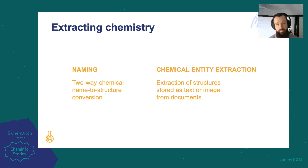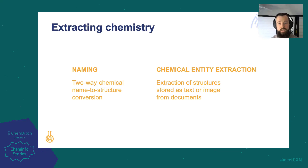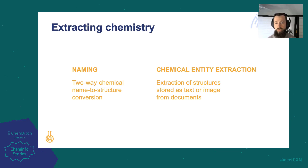We now move on to the extraction of chemistry from documents, where our naming tool enables the back-of-the-envelope conversion of over 200,000 chemical synonyms, drug brand names, agrochemical names, and natural products. Besides the IUPAC rules, it also supports INCI systematic names specific to the cosmetic industry. Building on the capabilities of naming, our chemical entity extraction technology identifies structural entities in text and images, and creates annotations with exact locations for future reference. It's commonly used in chemical text mining applications, including ChemCurator and ChemLocator, both brought to you by ChemAxon.